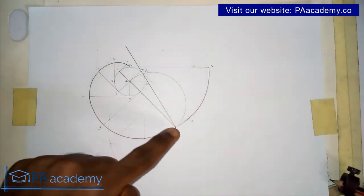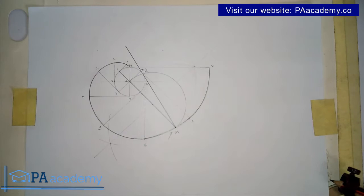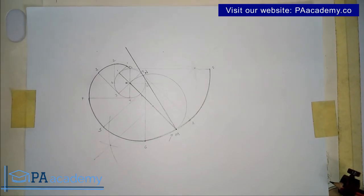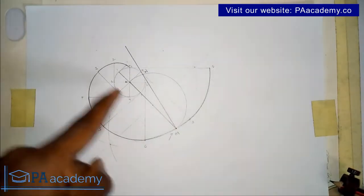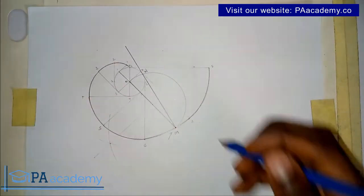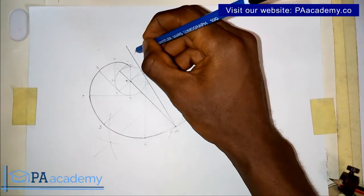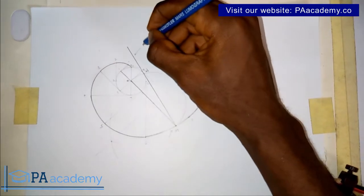This line we've just drawn is what we call the normal. So if you are asked to draw a normal to an involute of a circle, this is how you go about it. This line here is called the normal.